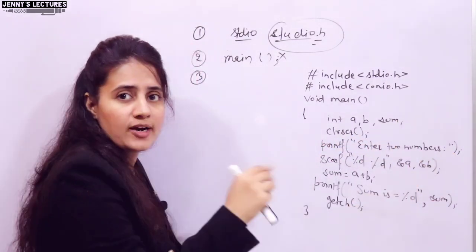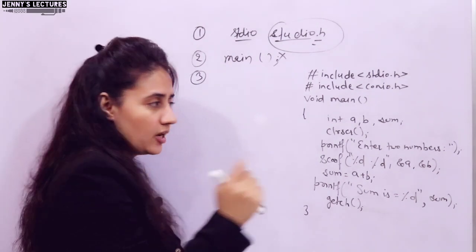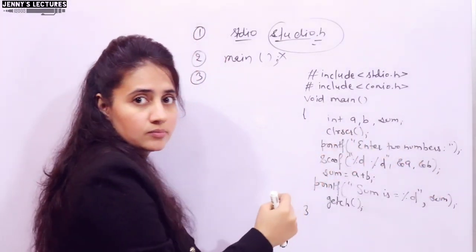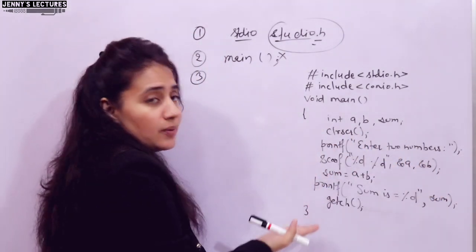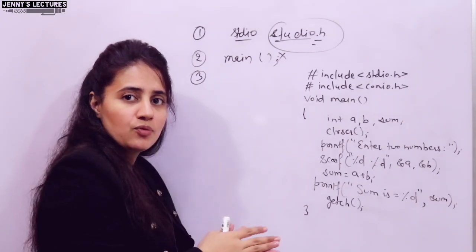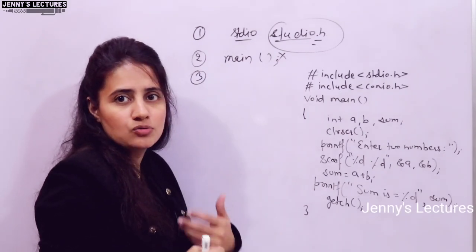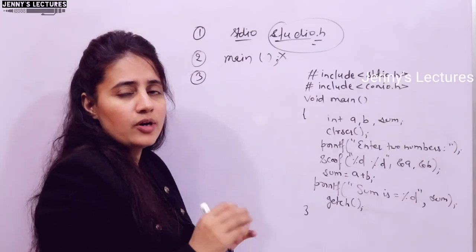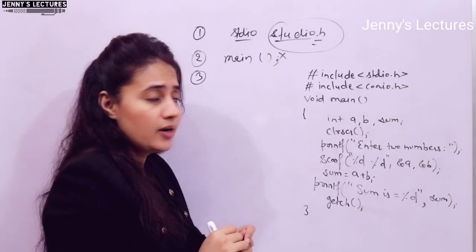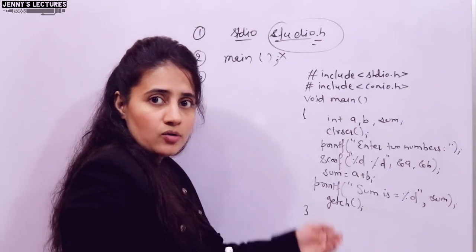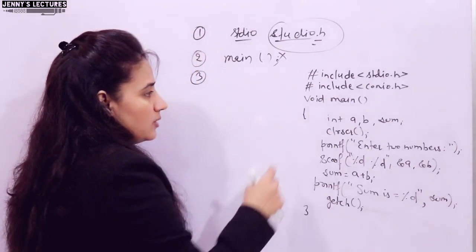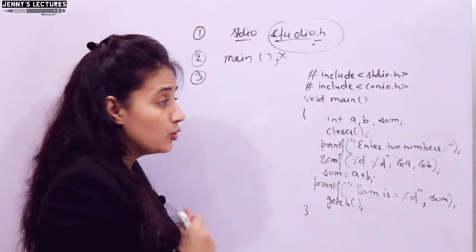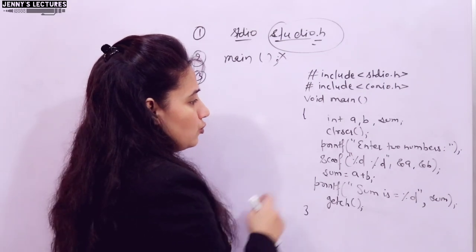Another common mistake is forgetting to write a semicolon after statements. After every statement you need to put a semicolon. There are some lines where you don't need a semicolon, but as you get habitual with writing programs you will automatically know where to put them — you don't have to memorize it.